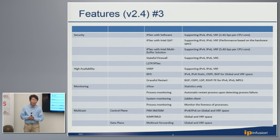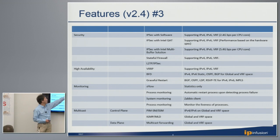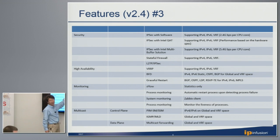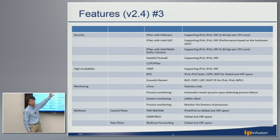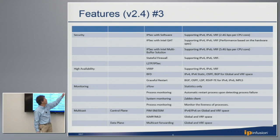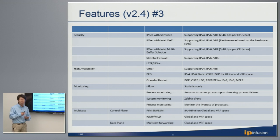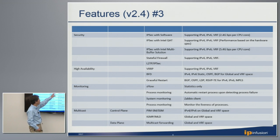The third is the Intel multi-buffer solution. Sandy Bridge or greater class CPUs can support Intel multi-buffer as part of SSE instructions. We use those CPU instructions for IPsec encryption and decryption, so no additional hardware is required. Without using Intel CPU functions, we can achieve 2.4 Gbps per CPU core, and if you assign more CPU cores you can increase total performance. Using Intel multi-buffer on the same CPU, we can achieve roughly 2x the performance.